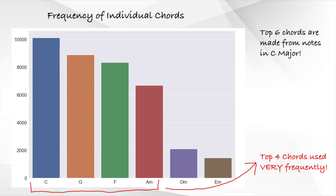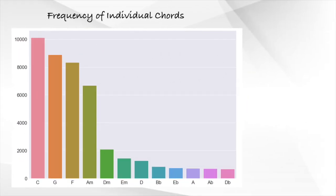C major, G major, F major, and A minor appear the most. These 4 chords are truly the most common chords that many songs use, so if you are trying to figure out some chords for a song, there's a high chance that it might be a combination of these 4 chords. Here is the same graph extended to include the top 12 most frequently used chords.